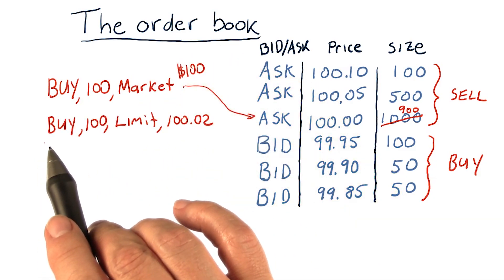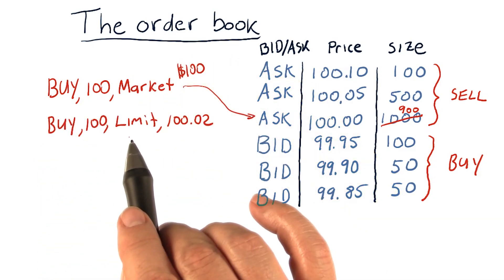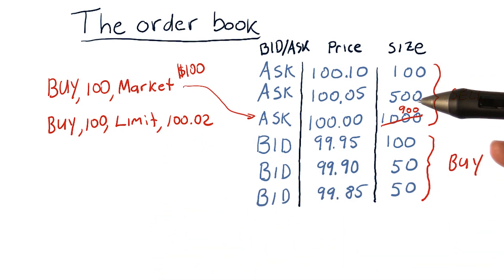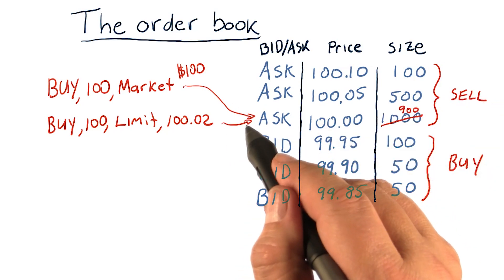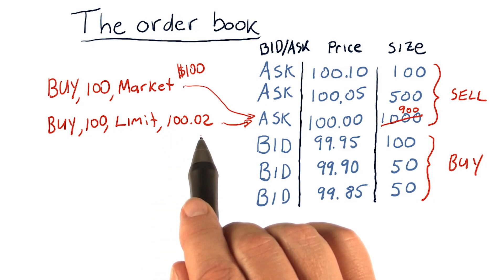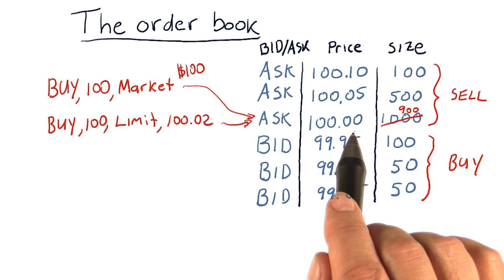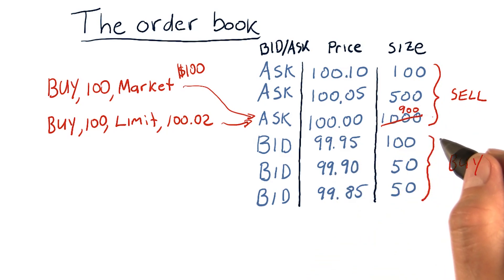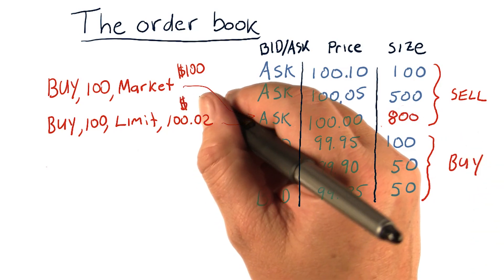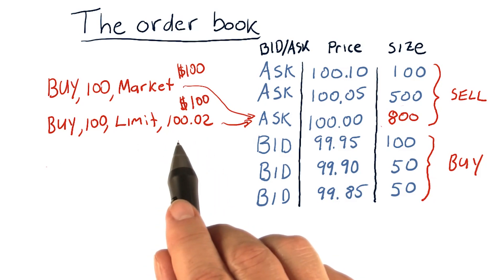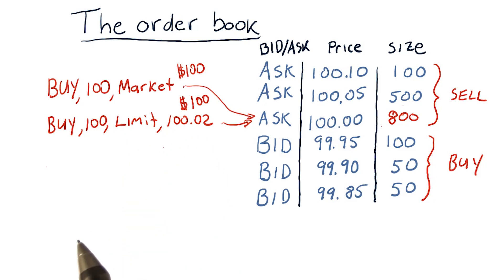Let's consider now a limit order. Someone wants to buy 100 shares at a limit of $102.02. Looking at the order book, we can satisfy that order at $100. We're saying we want to pay no more than $102.02, so we can execute it at $100. Now this goes down to 800 shares available instead of 900. The execution price for this transaction is $100 — note that's less than the limit price of $102.02.